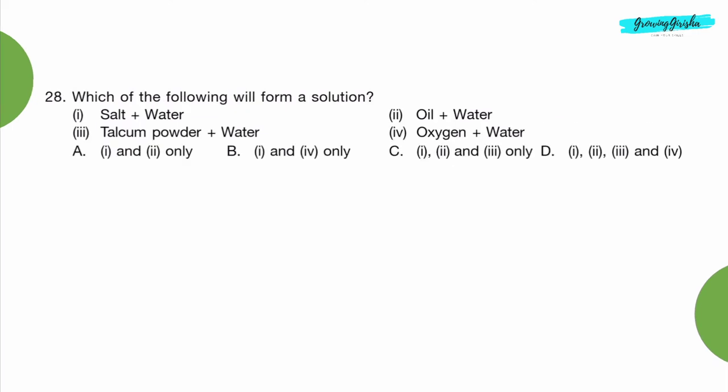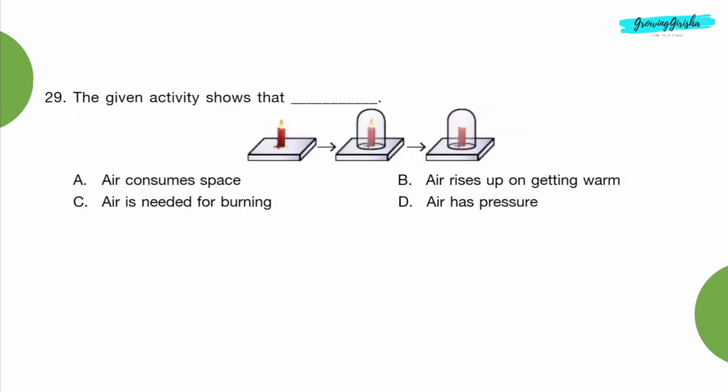Question 28: Which of the following will form a solution? Option B: One and four only. Question 29: The given activity shows that dash. Option C: Air is needed for burning.